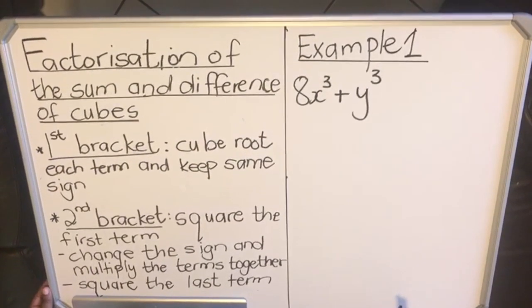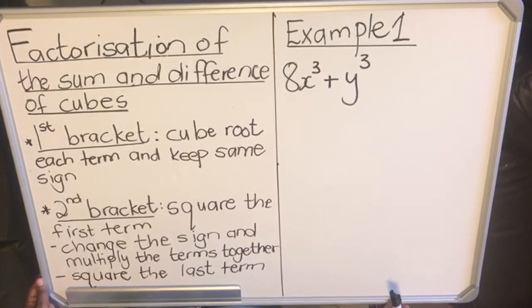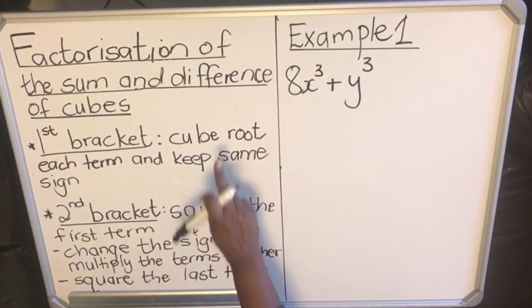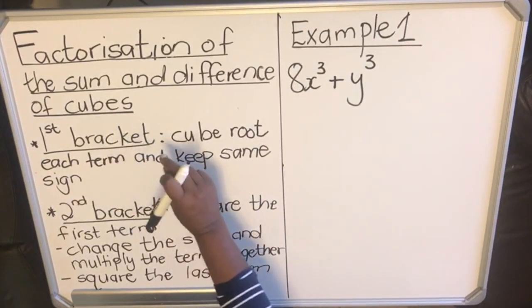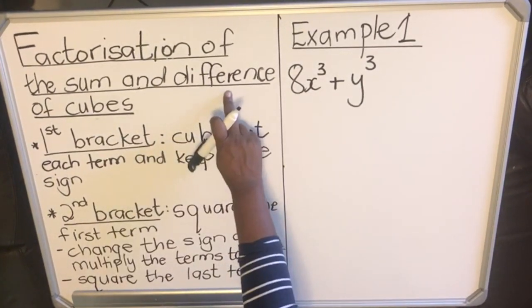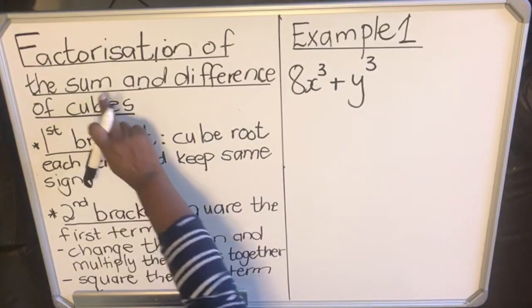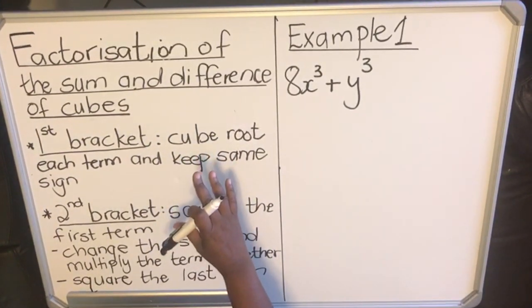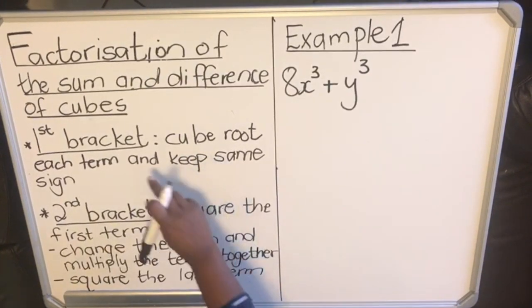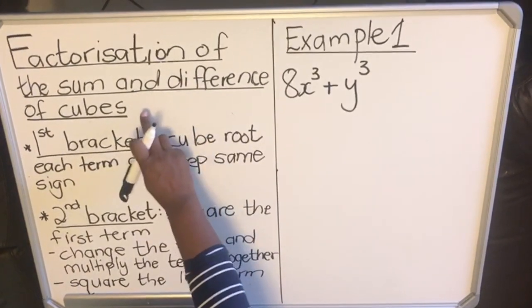Hello everyone, this is a lesson on factorization of the sum and the difference of cubes. With cubes, they're not like squares. With squares we only have the difference, with cubes we have both the sum and the difference. So when factorizing, we put things into brackets - we are trying to multiply.